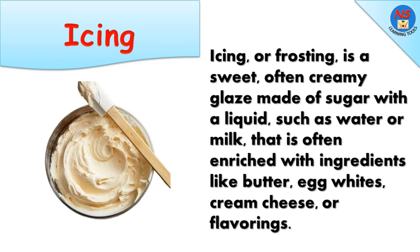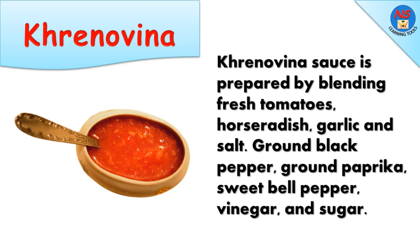Icing, or frosting, is a sweet, often creamy glaze made of sugar with a liquid such as water or milk, often enriched with ingredients like butter, egg whites, cream cheese, or flavorings. Krenovina sauce is prepared by blending fresh tomatoes, horseradish, garlic, salt, ground black pepper, ground paprika, sweet bell pepper, vinegar, and sugar.